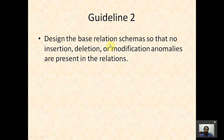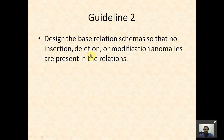Guideline 2 says that we have to design the base relation schemas so that no insertion, deletion, or modification anomalies are present in the relation. We have to design relations or tables such that these three anomalies are not present — insertion anomaly should not be there, deletion anomaly should not be there, and modification anomaly should not be present.